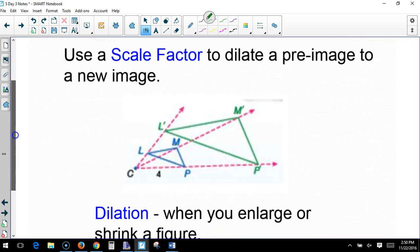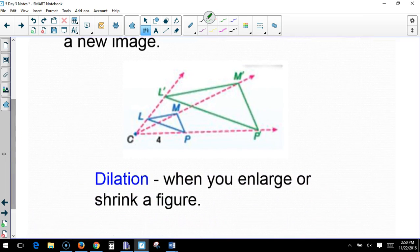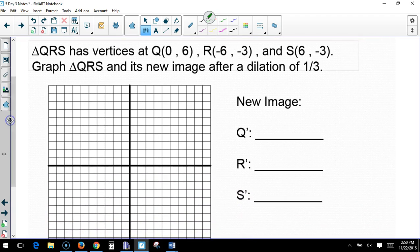Use a scale factor to dilate a preimage to a new image. So, dilation is when you enlarge or shrink a figure. We've seen this picture from lesson 2, actually. Are they similar? Let's see. QRS, 0, 6. There's my Q. R, negative 6. Negative 3. There's R. And S, that's 6, 1, 2, 3, 4, 5, 6. 1, 2, 3, S. Now, it says a new image after a dilation of 1 third. So, we're going to divide everything by 3.